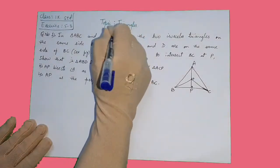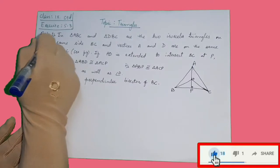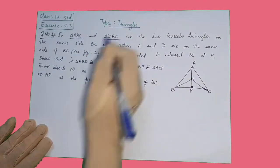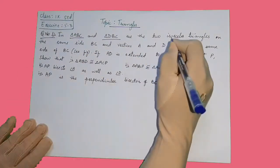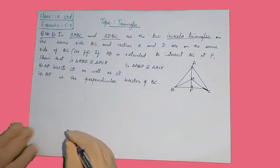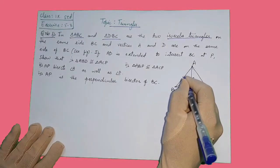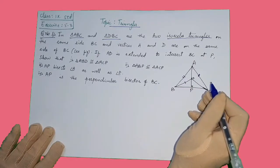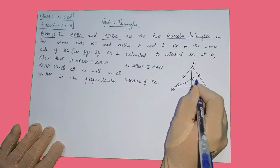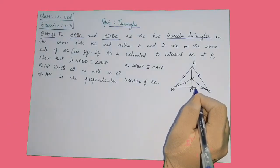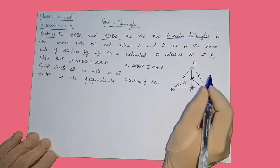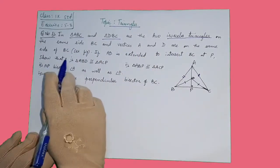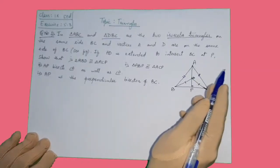Hello everyone. Now Triangles exercise 5.3 question number 1. In triangle ABC and triangle DBC, the two triangles are isosceles. Isosceles means two sides are equal, so AB is equal to AC, and DB is equal to DC. The vertices A and D are drawn on the same side of BC. If AD is extended to intersect BC at point P.